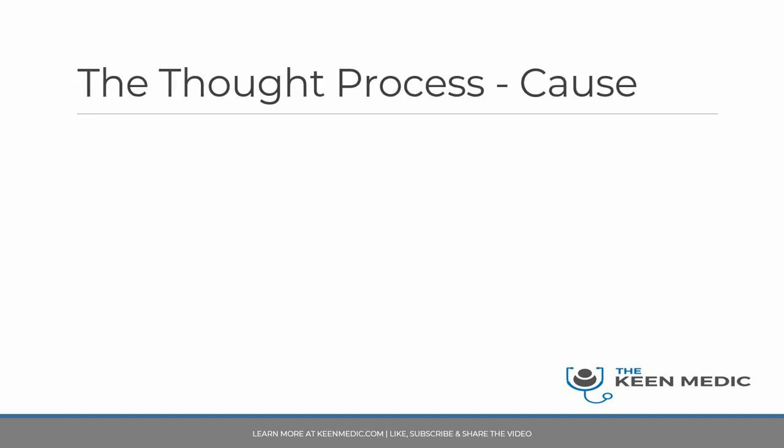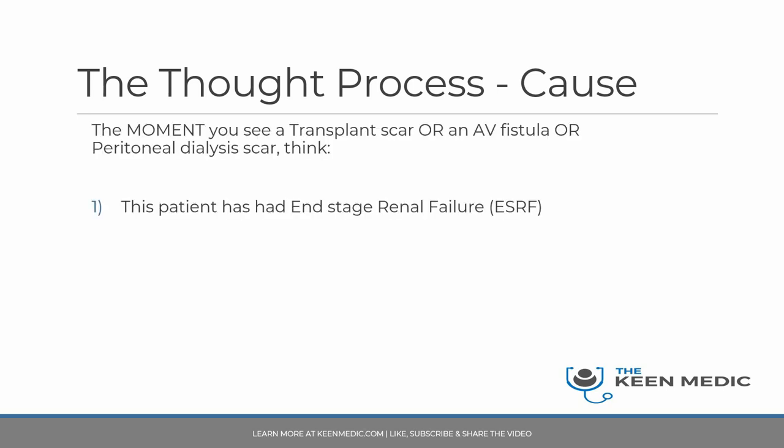Now let me take you through the thought process framework when you see a renal patient. The very first thing is to recognize that this patient has had end-stage renal failure. As soon as you see they have got an AV fistula, a transplant scar, or a peritoneal dialysis scar, you need to establish that this patient has had end-stage renal failure. That is the very first step.